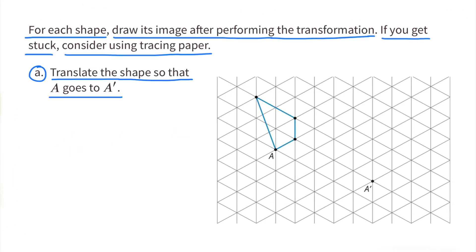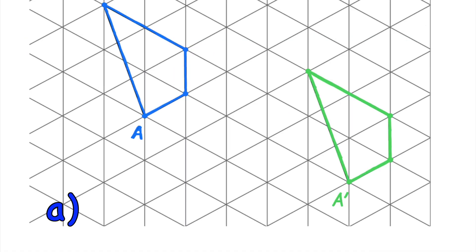A. Translate the shape so that A goes to A'. Translated from A to A', the image of the shape is represented in green.